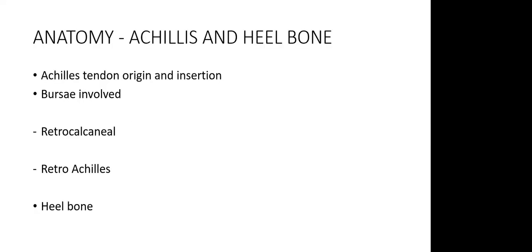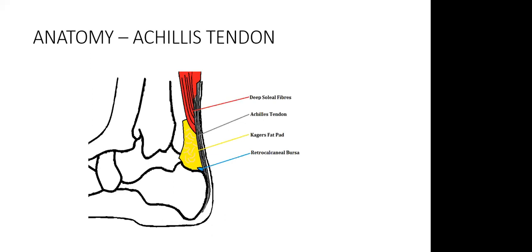When assessing the Achilles tendon anatomy, you need to know the origin and insertion, the bursae involved, and the heel bone itself. The Achilles tendon does not have a true tendon sheath — it has a combination of other structures running concurrently. Structures to understand include the soleus fibers, the Achilles tendon itself, and Kager's fat pad, which should not be mistaken for pathology. You also have the retrocalcaneal bursa and subcutaneous bursa to assess.